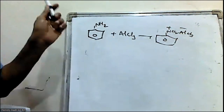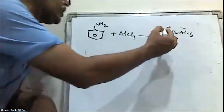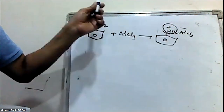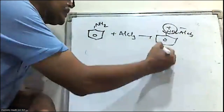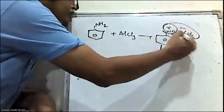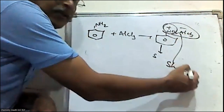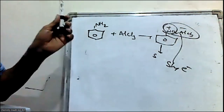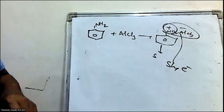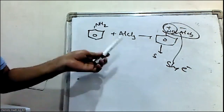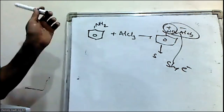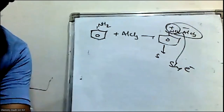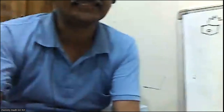The positive charge on nitrogen is a strong electron-withdrawing group, which deactivates the benzene ring for further alkylation or acylation. That positively charged nitrogen-containing species acts as a strong electron-withdrawing group, hence deactivating the ring for further electrophilic substitution. That's why aniline does not undergo Friedel-Crafts alkylation and acylation.